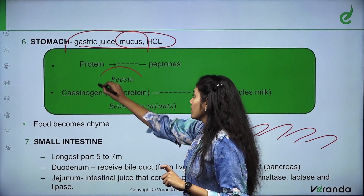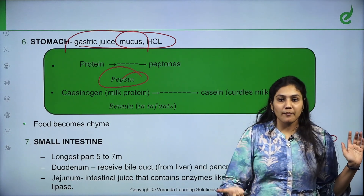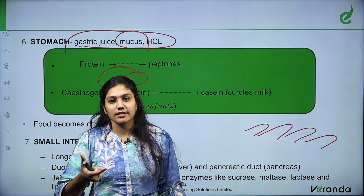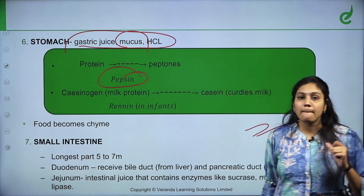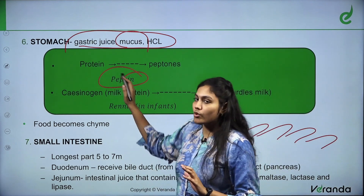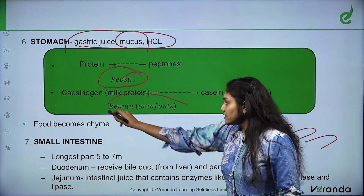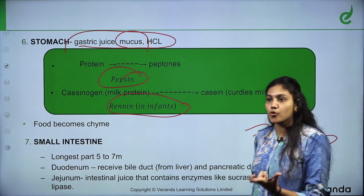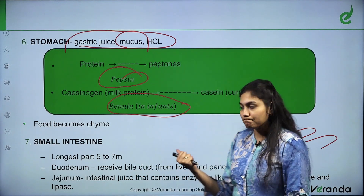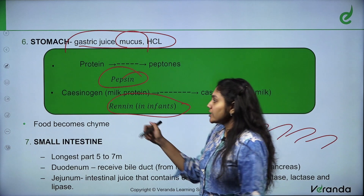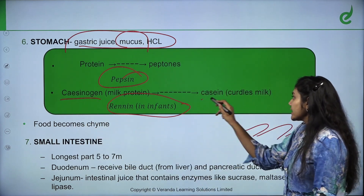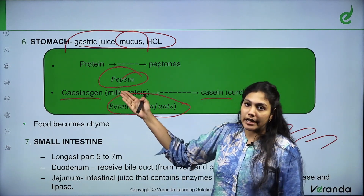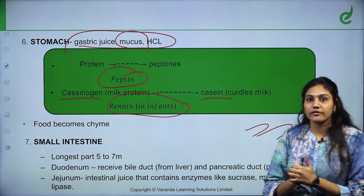First, pepsin — there is pepsinogen which becomes pepsin. First, carbohydrate digestion started in the mouth, then proteins are broken down by pepsin into small particles. Caseinogen is the milk protein, which becomes casein with the help of renin. Renin is present in infants; adults only have pepsin enzyme.